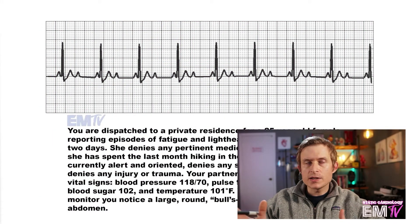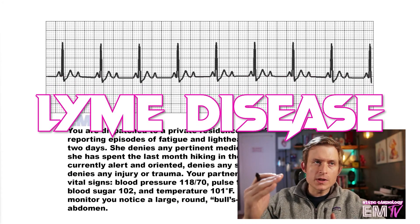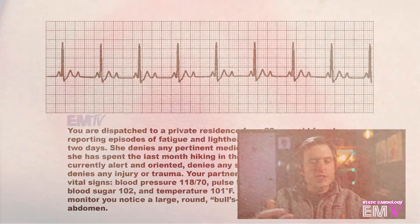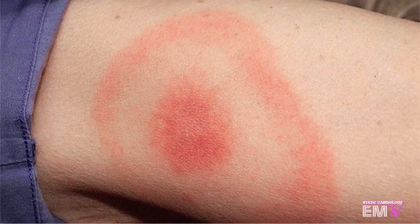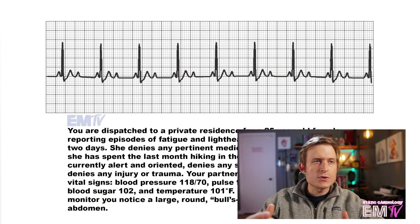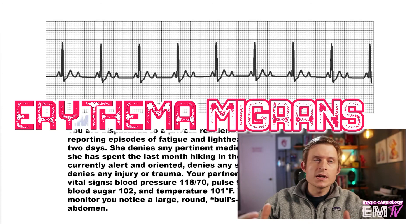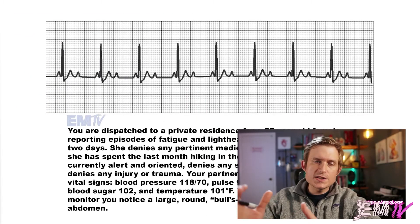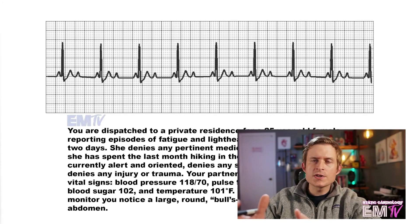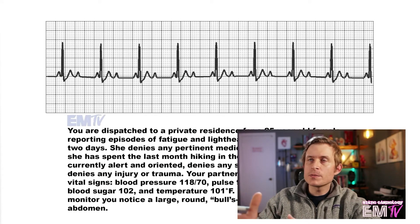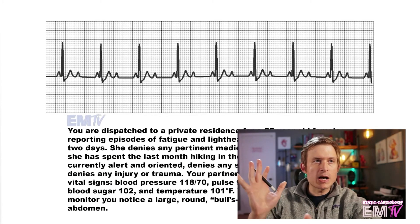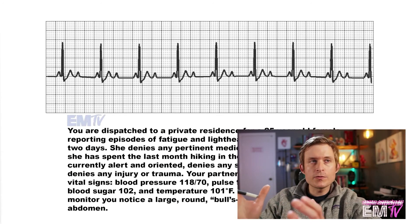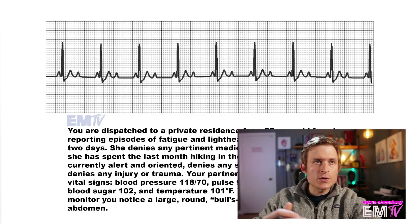The interesting thing about her case is she was hiking in an area of the country that's known to have Lyme disease. You're also noticing the presence of a round bullseye rash on her abdomen. This is otherwise known as erythema migrans. Lyme disease is one of the few causes of second-degree type 2 heart blocks in otherwise healthy patients, so it wouldn't be uncommon for somebody with Lyme disease to present with a rhythm that's outside of the norm. This, however, won't affect your treatment.